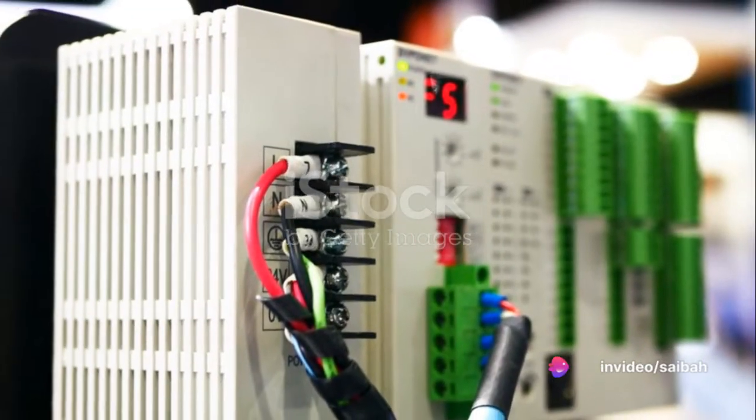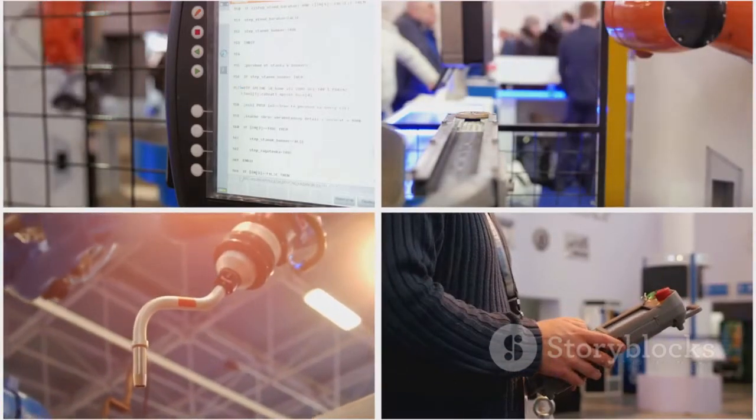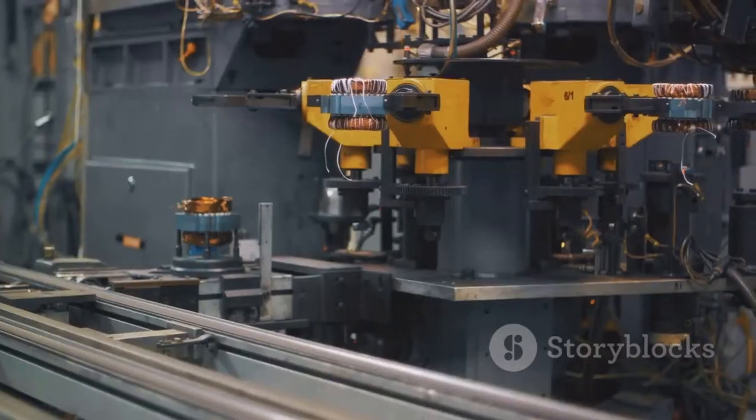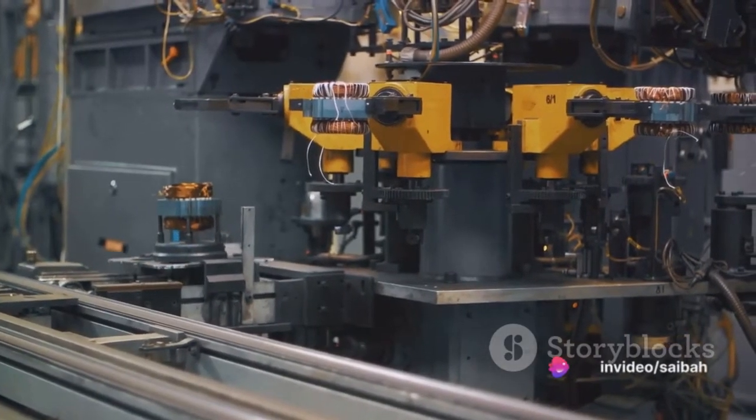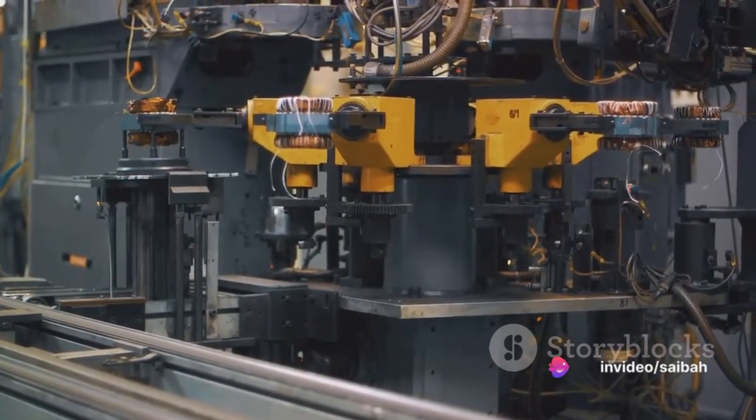Moving on, we have the 3-wire transmitters which come in two varieties, the current source and the current sink. The source transmitter allows the current to flow from the transmitter to the load, while the sink transmitter allows the current to flow from the load to the transmitter.